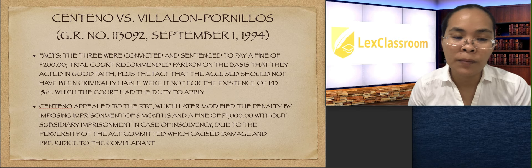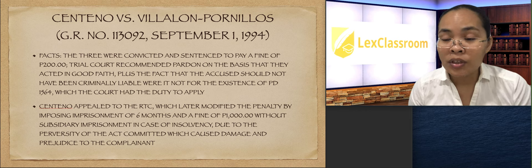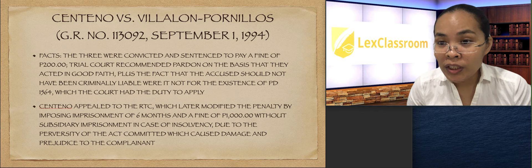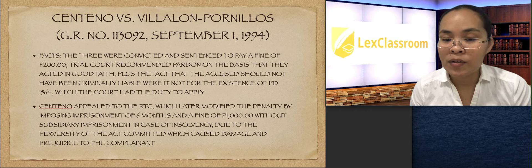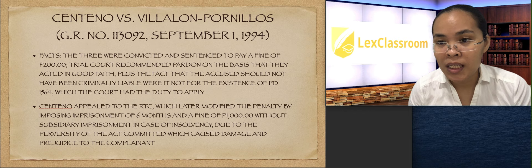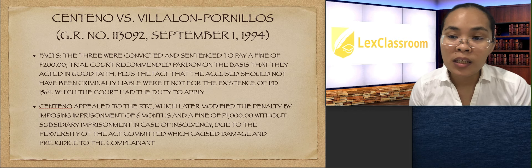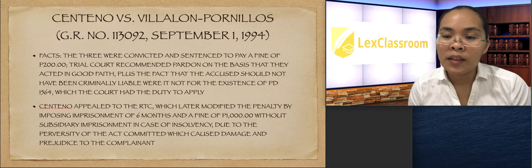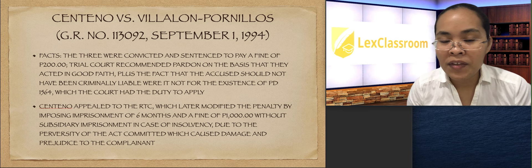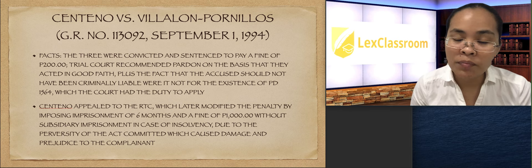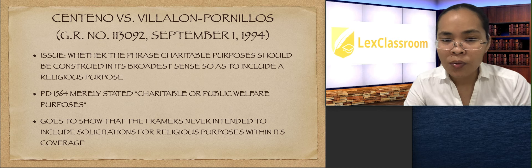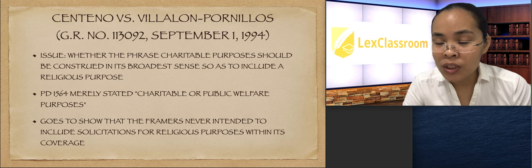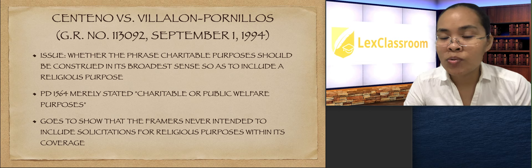Centino appealed to the Regional Trial Court, which convicted them and modified the penalty by imposing imprisonment of six months and a fine of 1,000 pesos without subsidiary imprisonment in case of insolvency. The RTC modified the penalty because of the perversity of the act, which caused damage and prejudice to the complainant. The issue is whether the phrase 'charitable purposes' should be construed broadly to include a religious purpose.